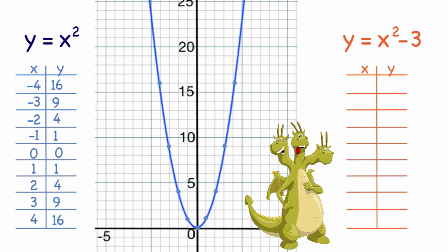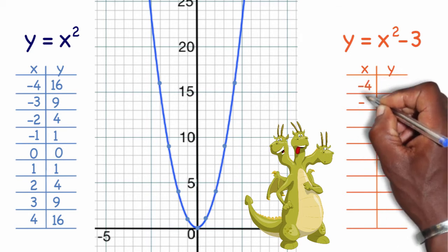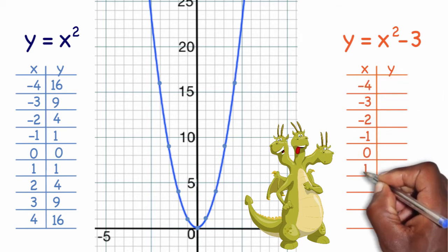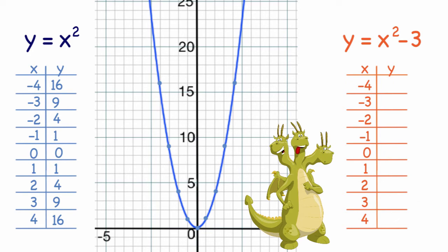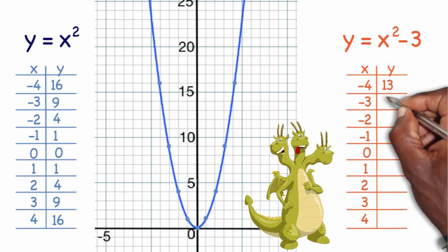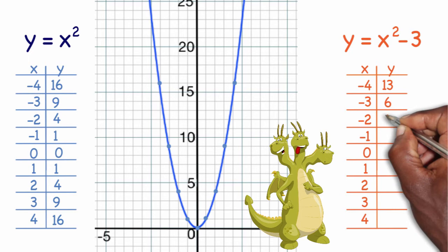I'll keep my x values the same—I'll go from negative 4 to 4 for my x values. For my y values, I can use my formula: negative 4 squared is 16 minus 3 is 13; negative 3 squared is 9 minus 3 is 6; negative 2 squared is 4 minus 3 is 1; negative 1 squared is 1 minus 3 is negative 2.